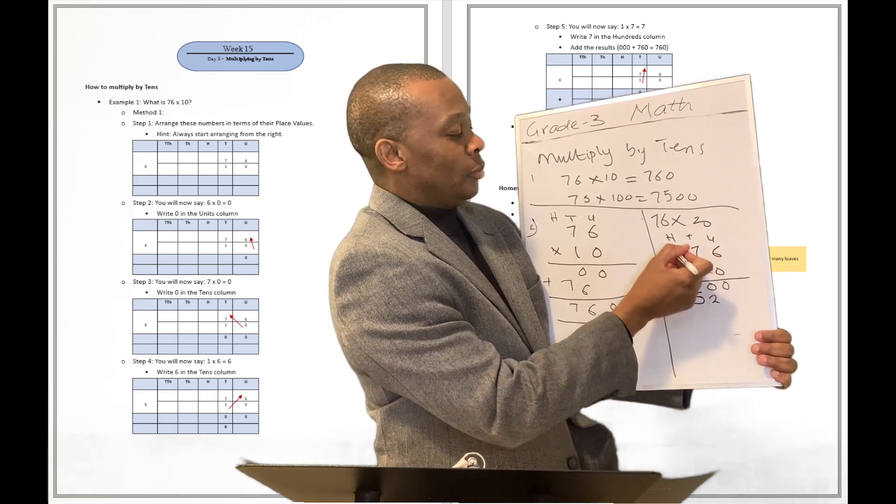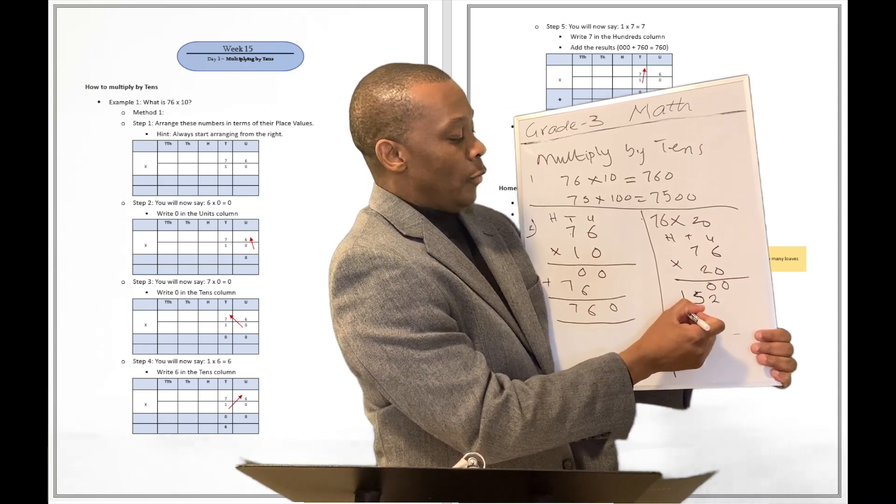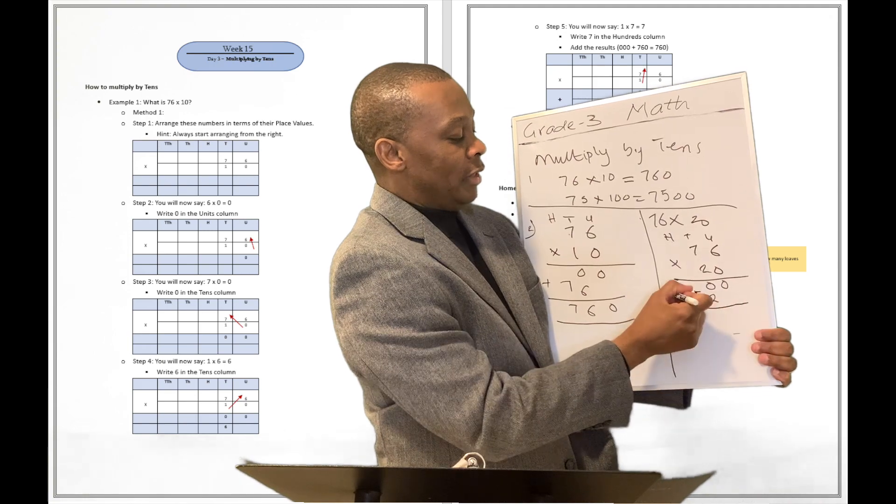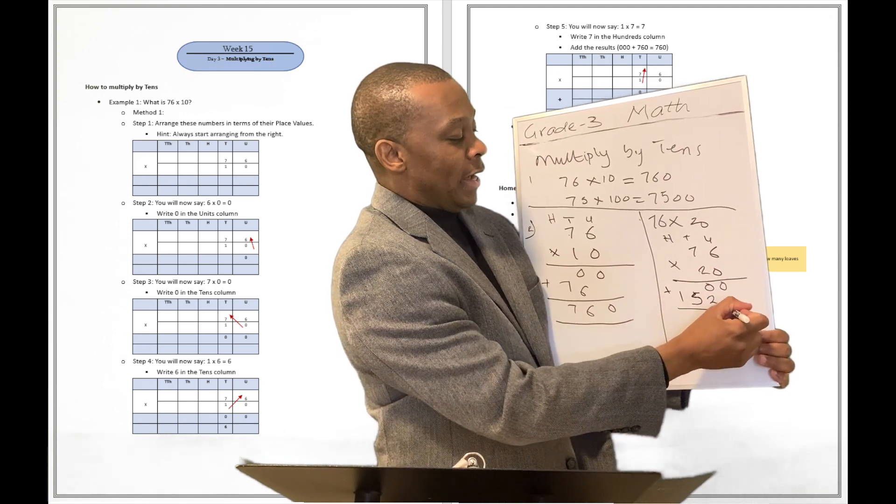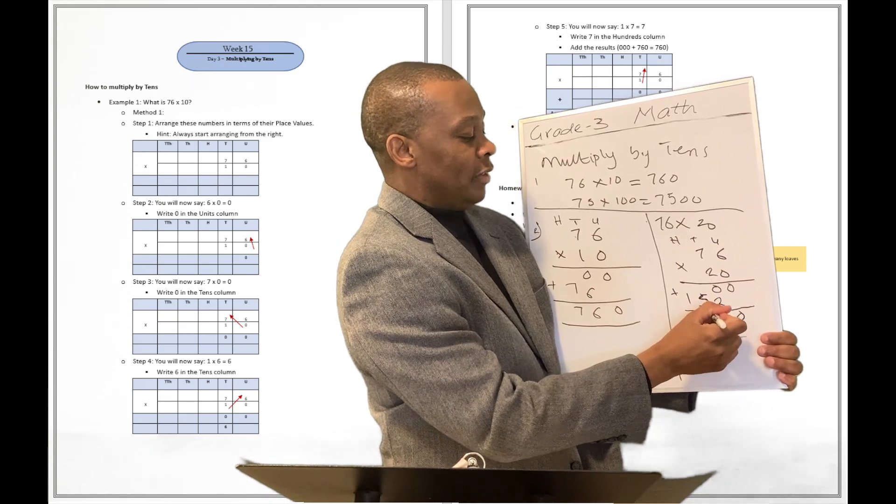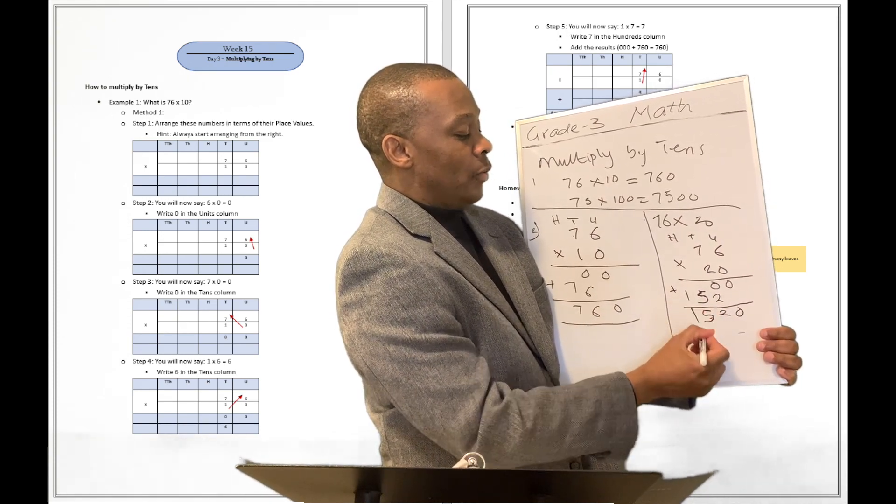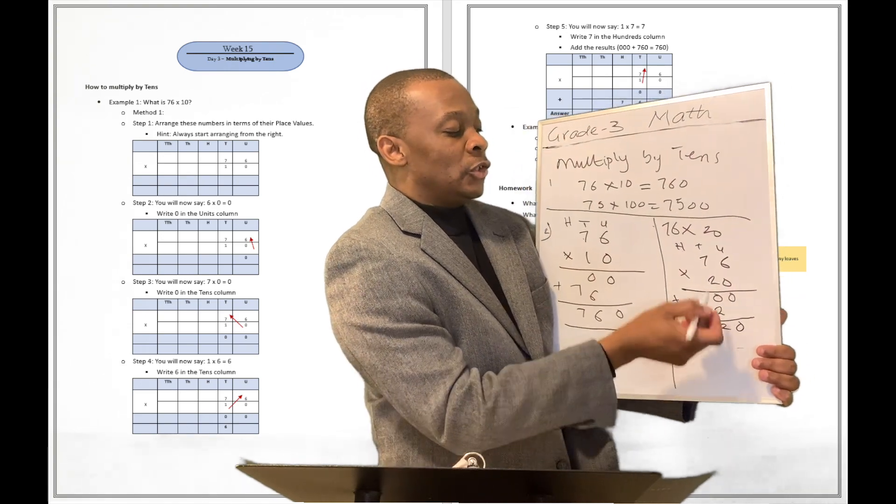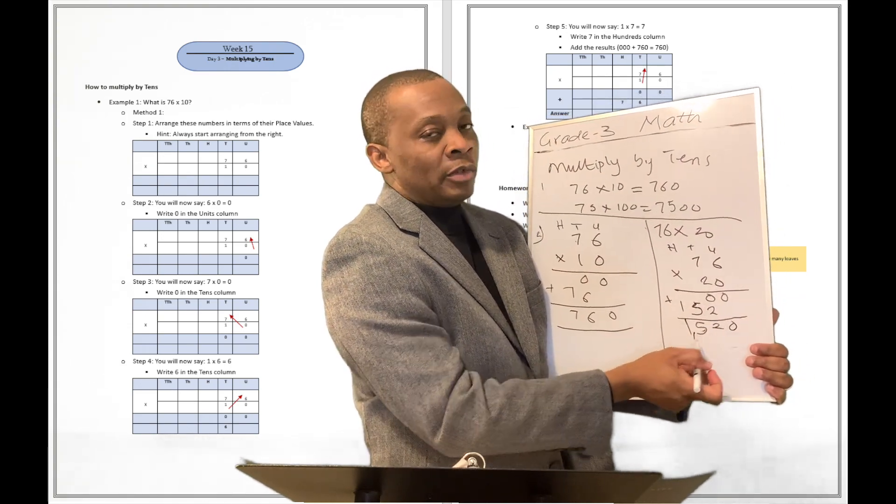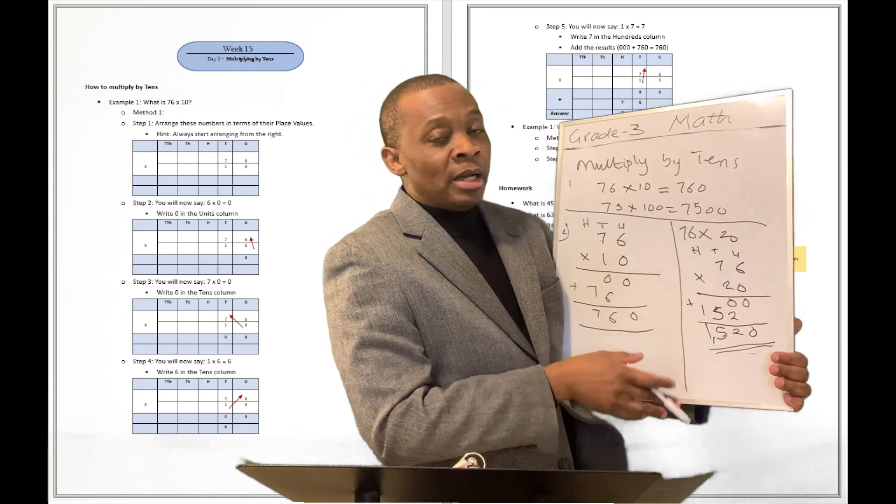And then you carry your 1 over here. And then 2 multiplied by 0 is 0 plus 1. And that's going to be 1 for you. So, you're going to have everything added together. You're going to have your 0, 5, and 1. So, that's 1,520. Pretty easy, all right? So, that's how you can multiply by 10s.